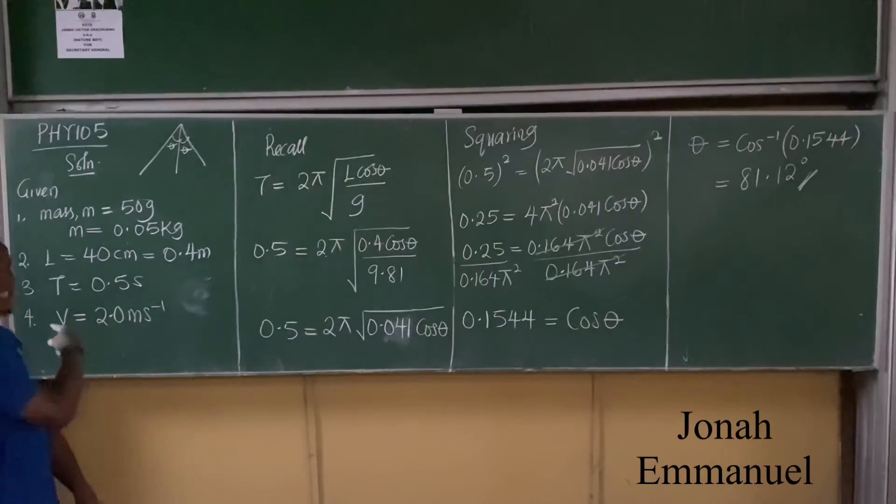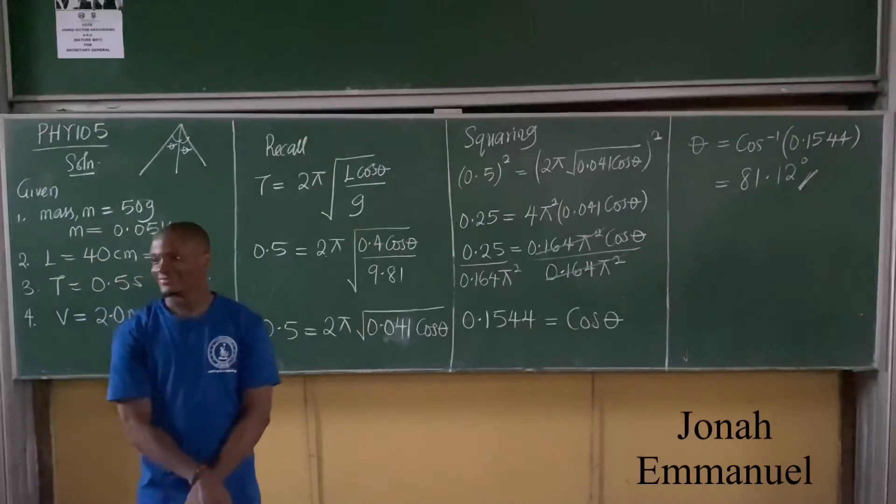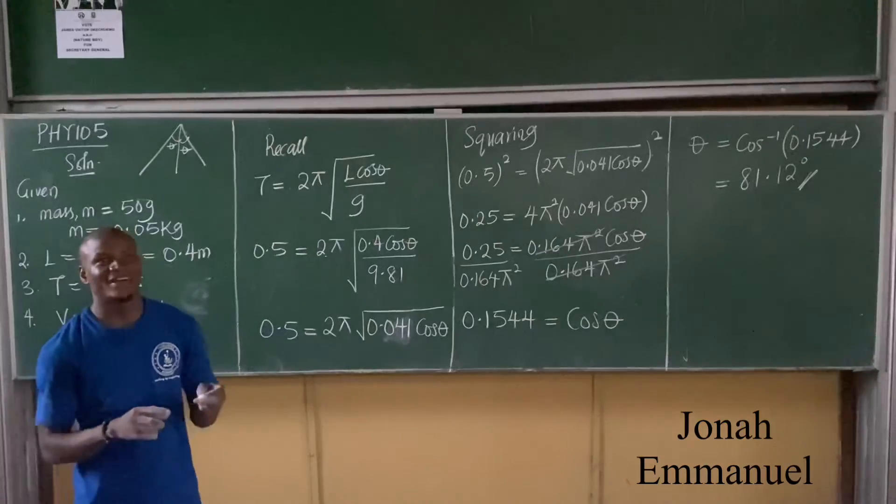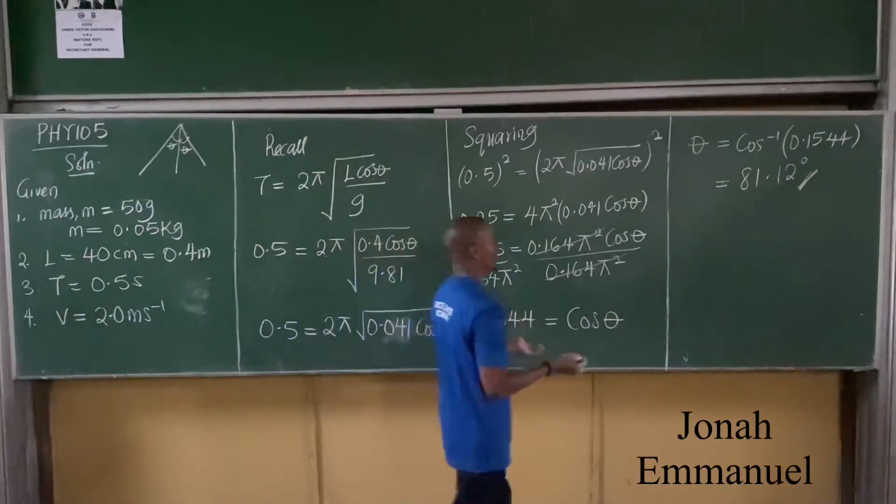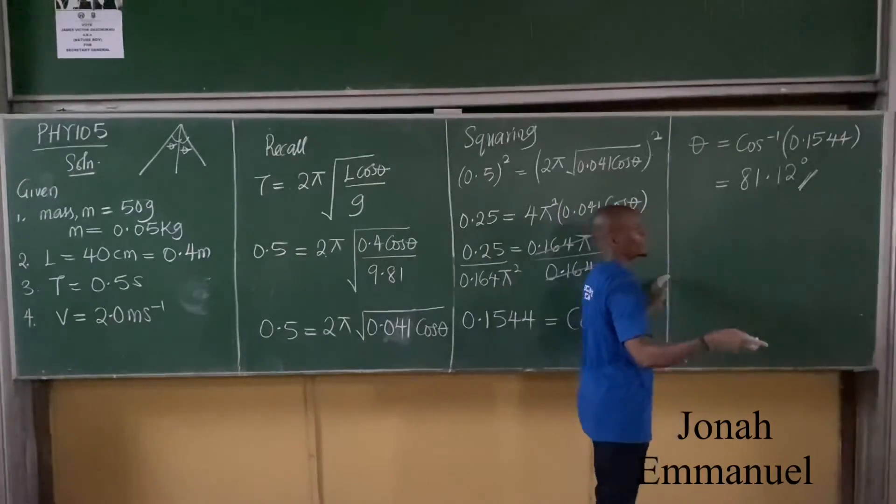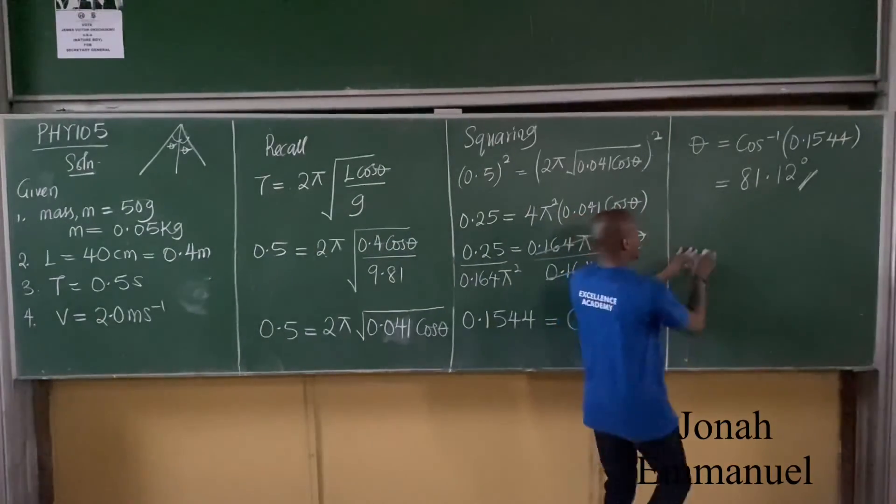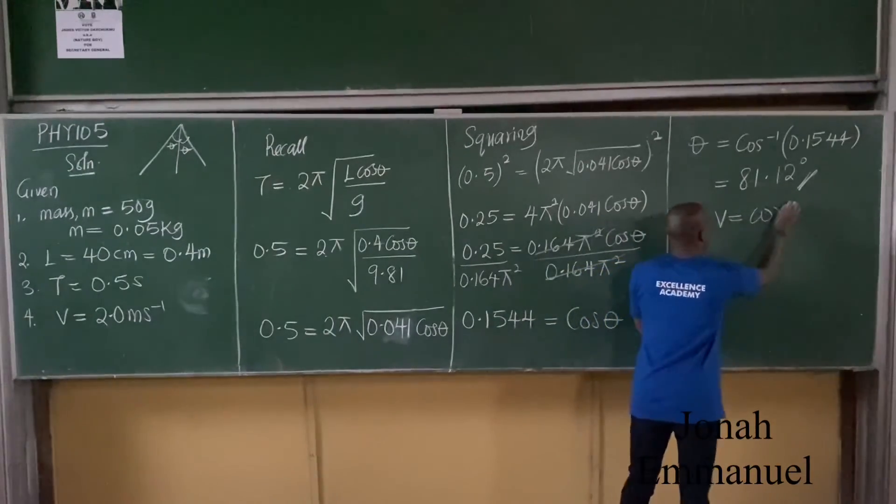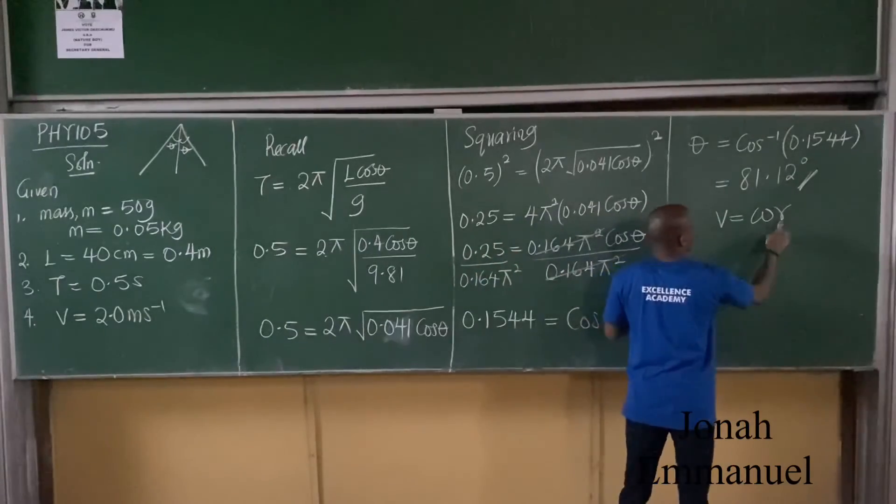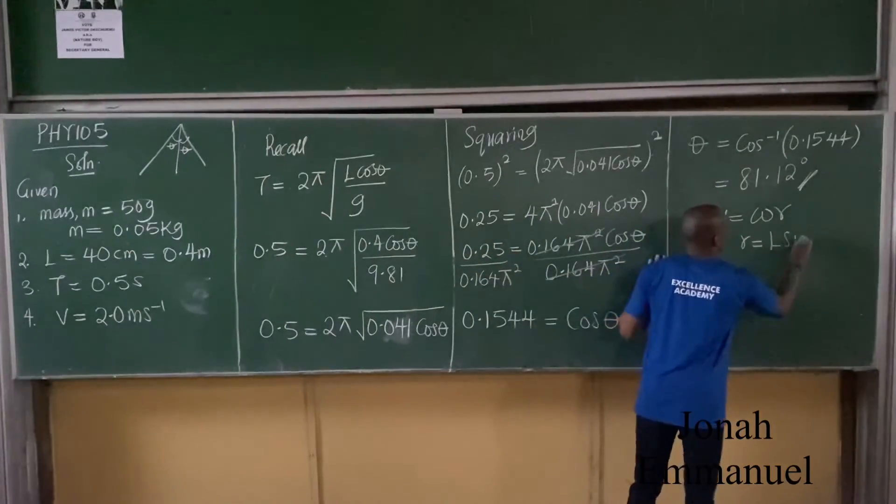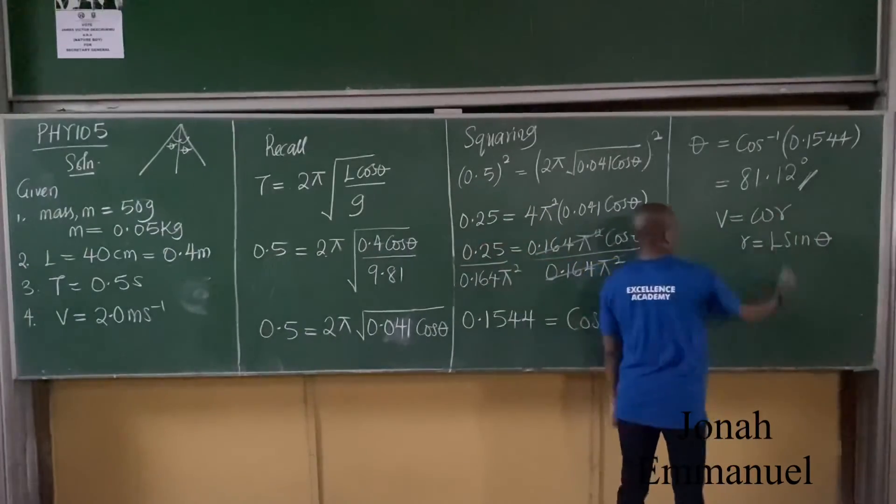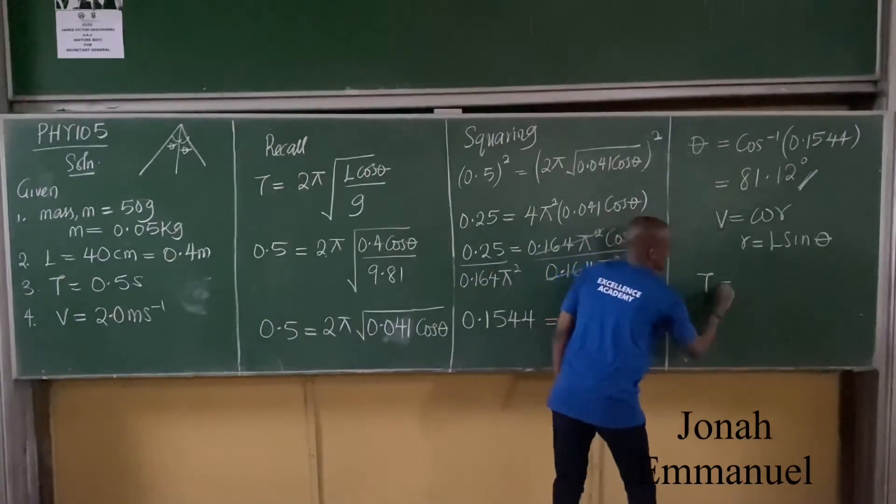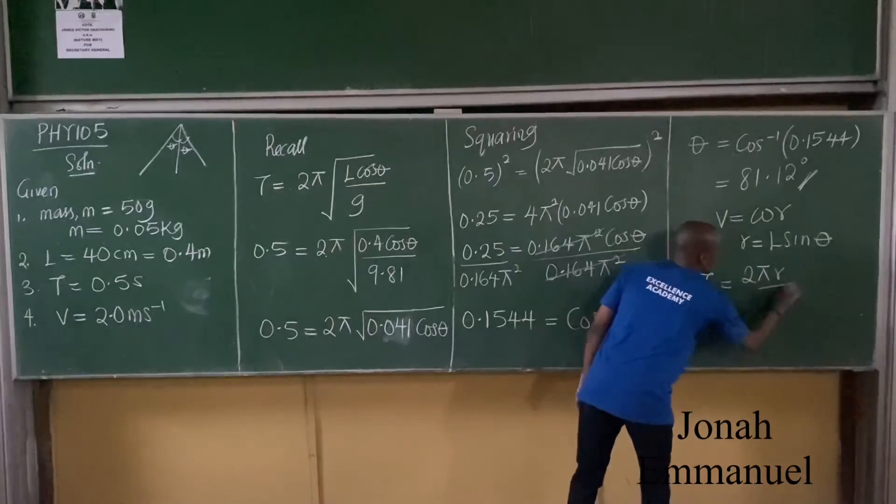Alright, with our formula. R is equal to, you have to find omega. From our analysis of circular motion the last class, we said V is equal to omega R. V is 2.0. And we say R is equal to L sine theta. So L is there, theta is here. Or you simply say, we said period is equal to 2π R over V.